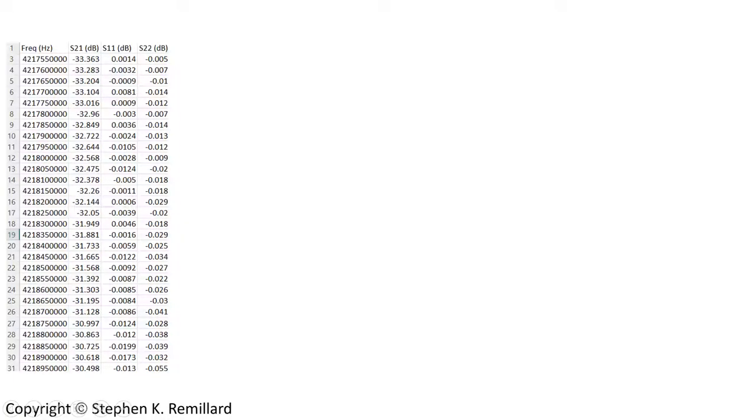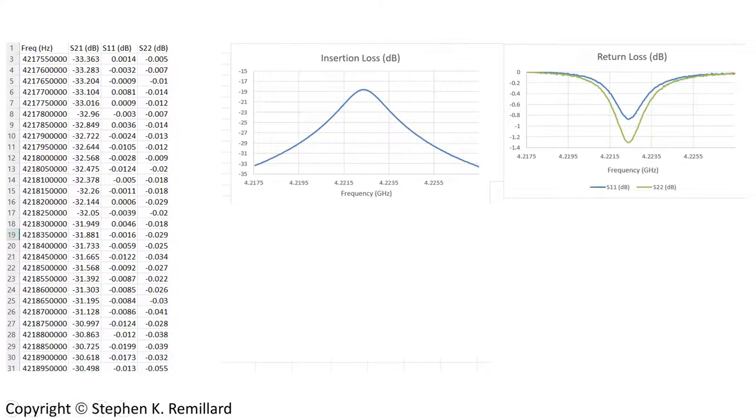Here we have the S-parameters in an Excel spreadsheet. Frequency in Hertz and the S21, S11, and S22 straight off the network analyzer in decibels. I think it's worth having a look at these S-parameters to make sure that they look just like what we saw in the network analyzer display. And they do.